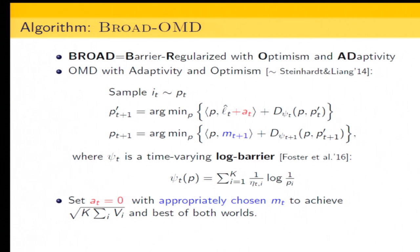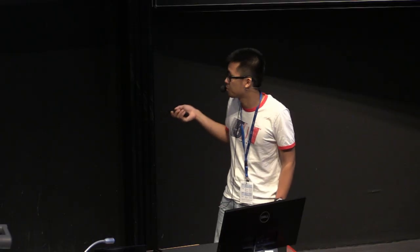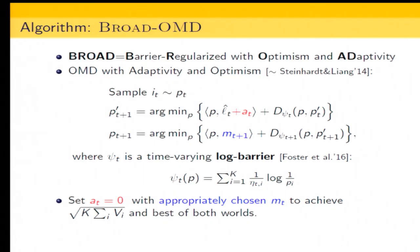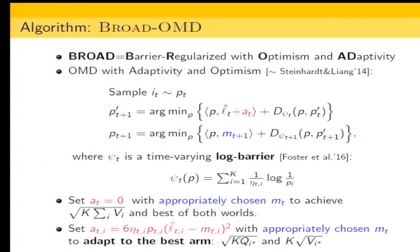I'll briefly talk about how to pick A_T and M_T to achieve the previously mentioned bounds. If you set A_T to be zero, it becomes optimistic online mirror descent, and you can achieve the path length bound that depends on the sum of path lengths and the best-of-both-worlds bound. If you set A_T to be this specific quantity, you can get a regret bound that adapts to some quantity of the best arm.